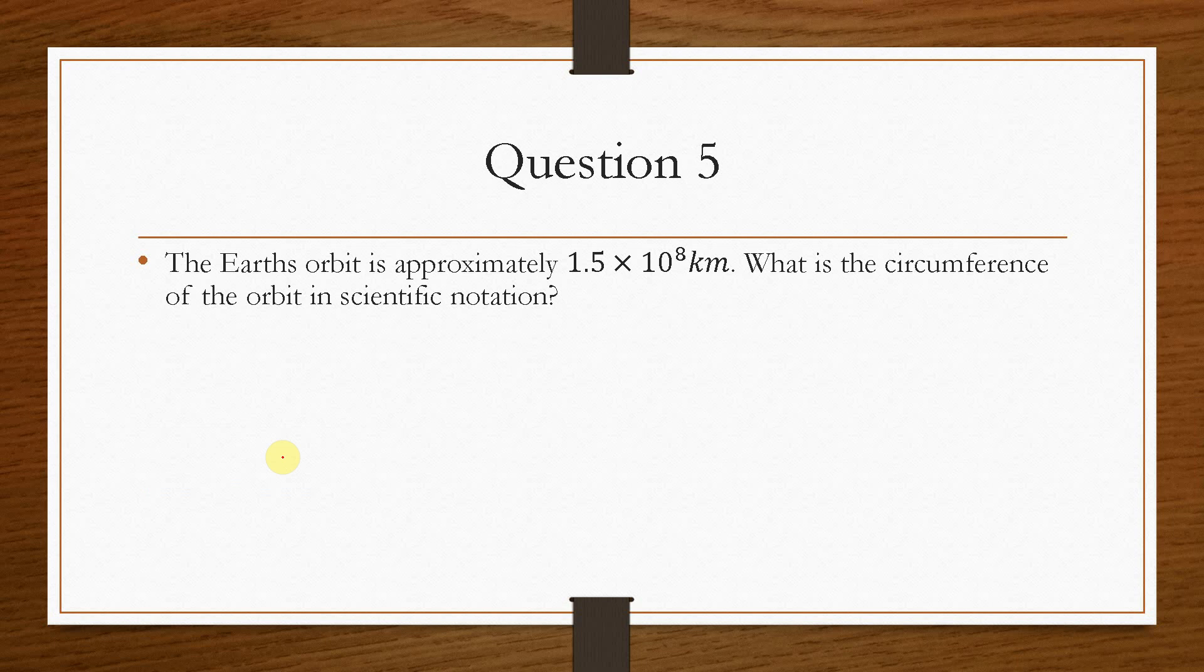Now, question 5 is, the Earth's orbit is approximately 1.5 times 10 to the power 8 kilometers. What is the circumference of the orbit in scientific notation? Then the equation for the circumference of the circle is given by c equals pi d. So this is a problem-solving question that involves scientific notation. And that's quite common in an exam. So what we need to then deduce here is that we're told that the Earth's orbit is approximately 1.5 times 10 to the power 8.